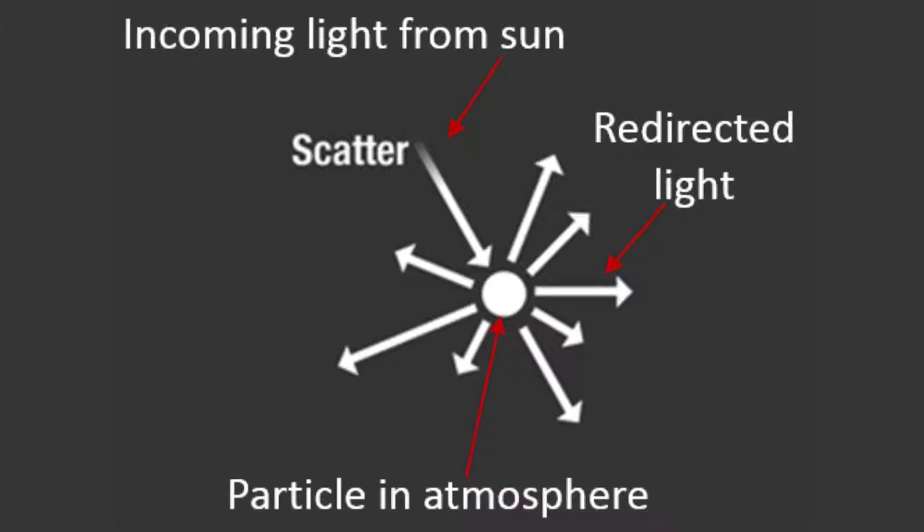When white light coming from the sun interacts with the atmosphere, the air particles absorb all visible colors except for blue. Air particles scatter the blue color in all directions. This is why we see the sky in blue.